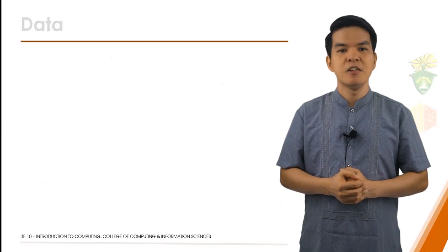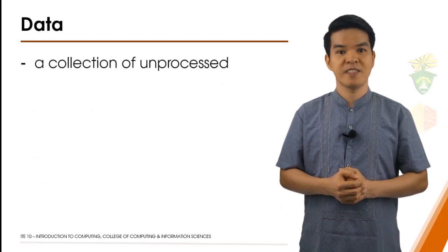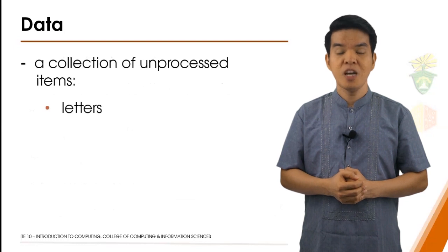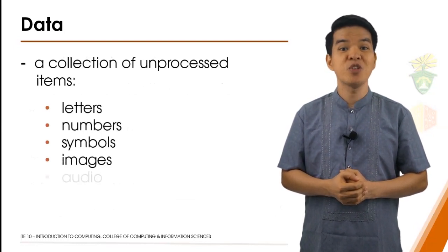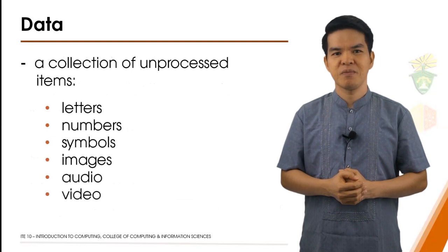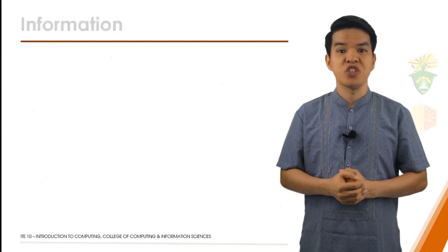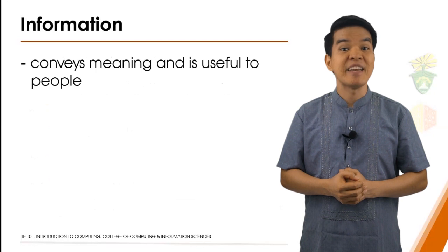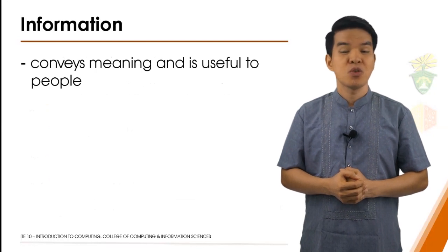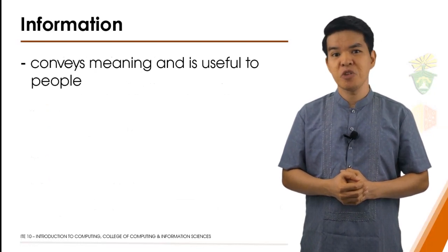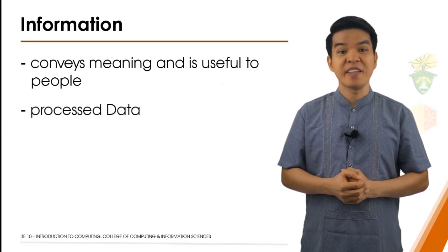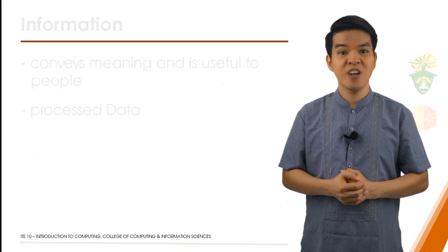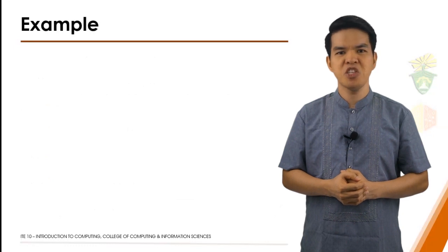Data is a collection of unprocessed items such as letters, numbers, symbols, images, audio, and video. Information, on the other hand, conveys meaning and is useful to people — or to make it short, information is processed data. Let me show you an example of how a computer processes data into information.